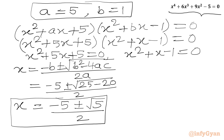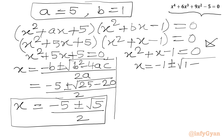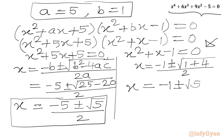Now we solve the second quadratic x² + x − 1 = 0. Applying the quadratic formula: x = (−1 ± √(1 + 4)) / 2 = (−1 ± √5) / 2. So we have in total 4 real solutions.